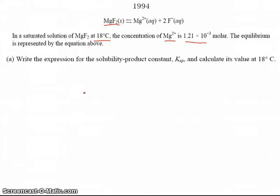Write the expression for the solubility product constant and calculate its value at 18 degrees Celsius. Well, the Ksp is easy to write. Ksp equals the concentration of magnesium plus 2 times fluoride ion concentration squared. This ought to look pretty similar to the problem we did back from 1985. Now, calculating its value is a little bit different. We're going to have to apply a little basic stoichiometry.